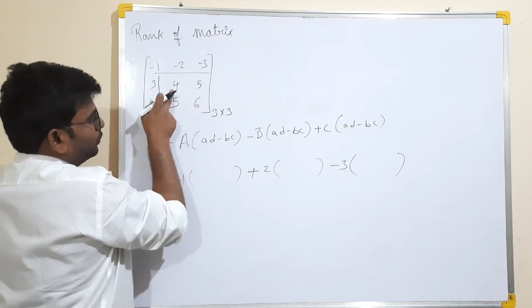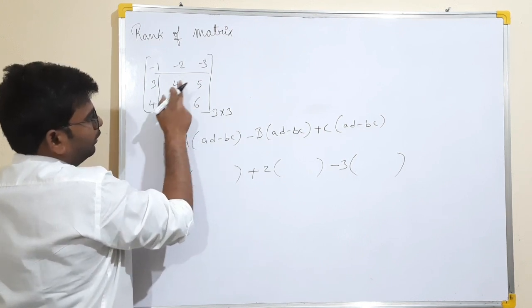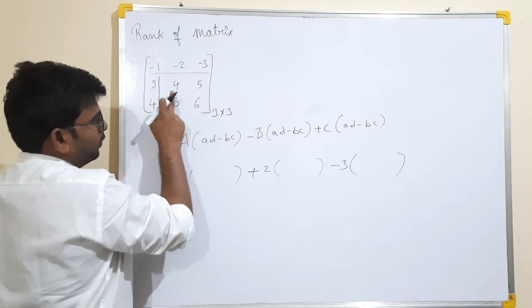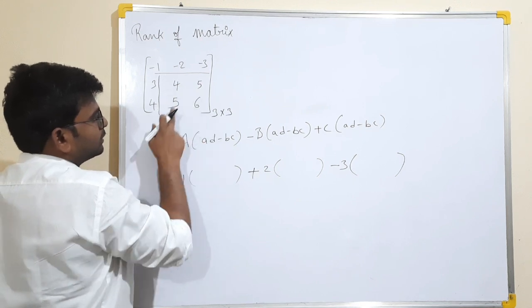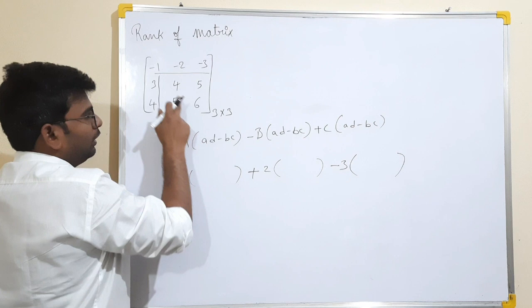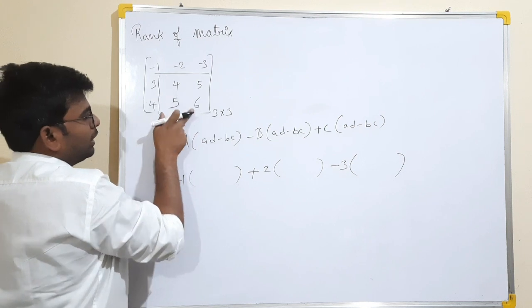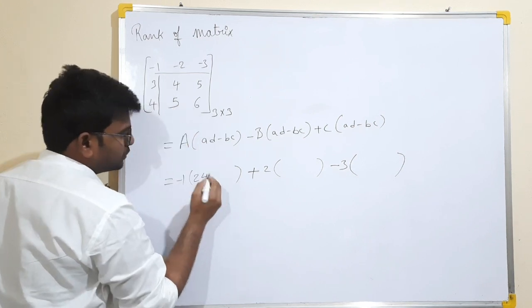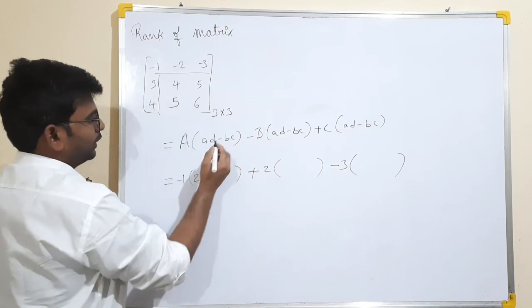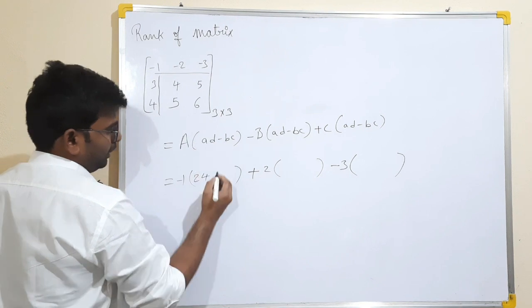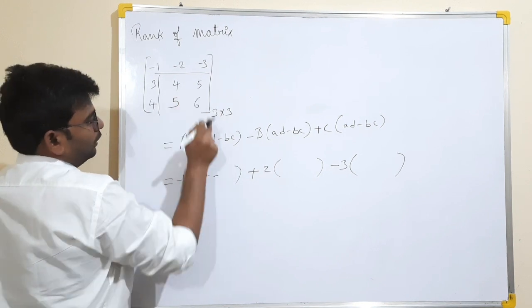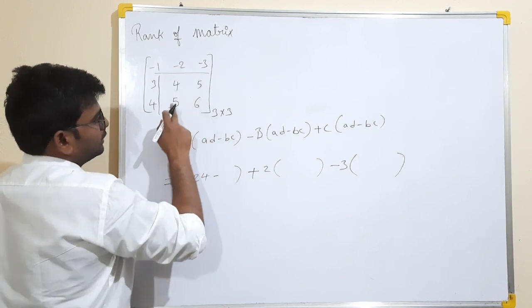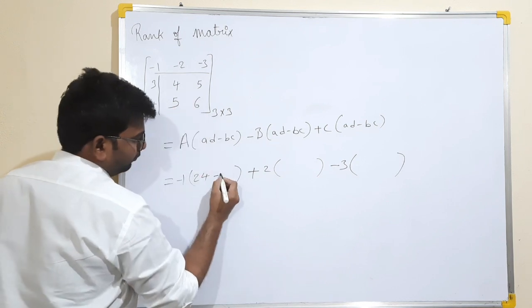A is the value. B is the value. C is the value. Small A, small B, small C, small D. A, D — six fours are 24. Minus minus. Next, B, C — it is B, it is C. 5 fives are 25.